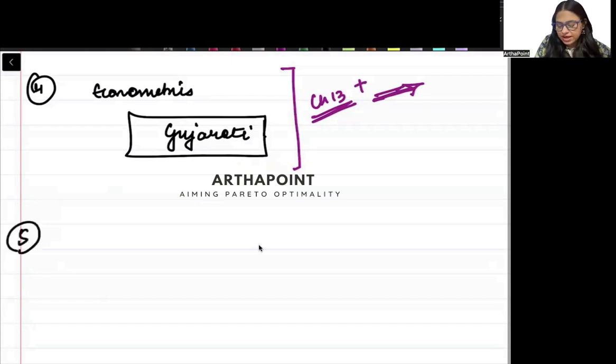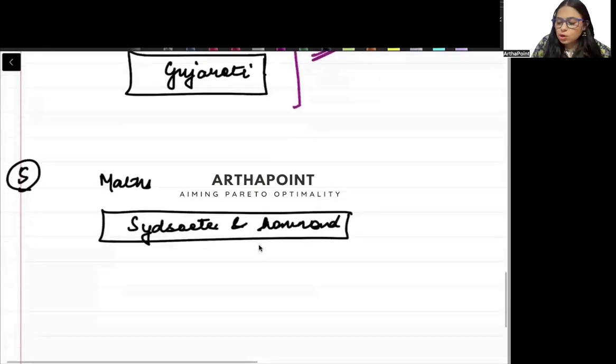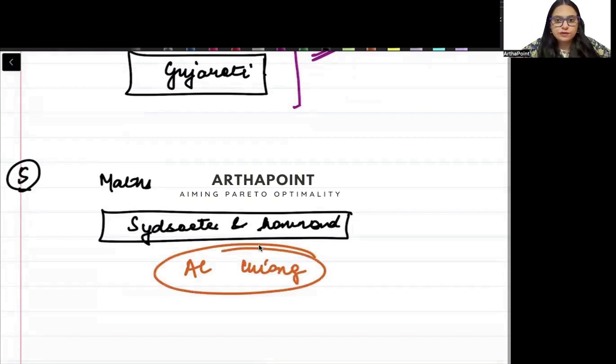Then we have maths. For maths, you can do Sydsaeter and Hammond. This is a much well written book as compared to A.C. Chiang. Although A.C. Chiang is a good book, but A.C. Chiang is a lower version of this book. It's comparatively easier as compared to Sydsaeter and Hammond. I kind of think you should be going for Sydsaeter and Hammond.